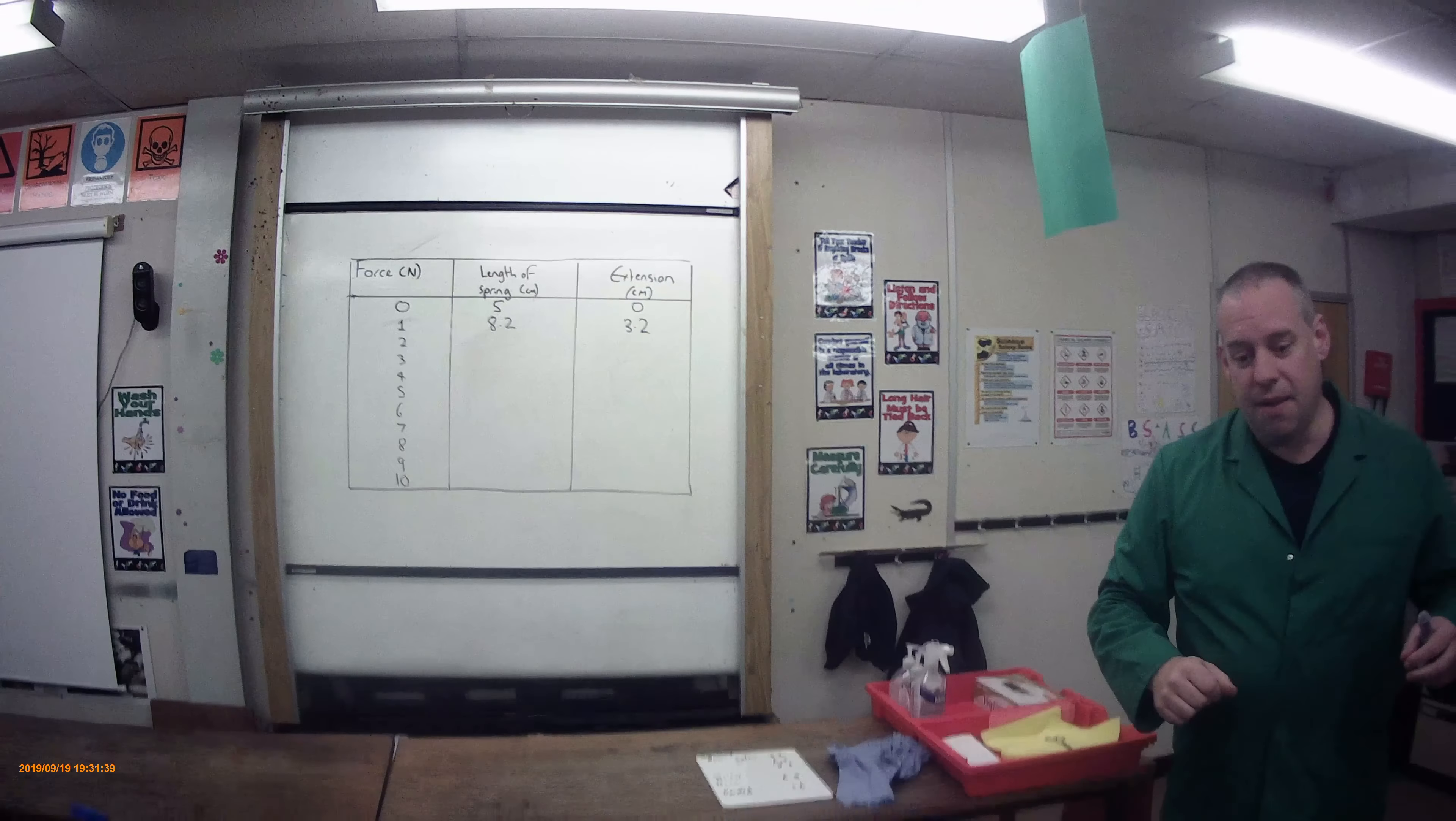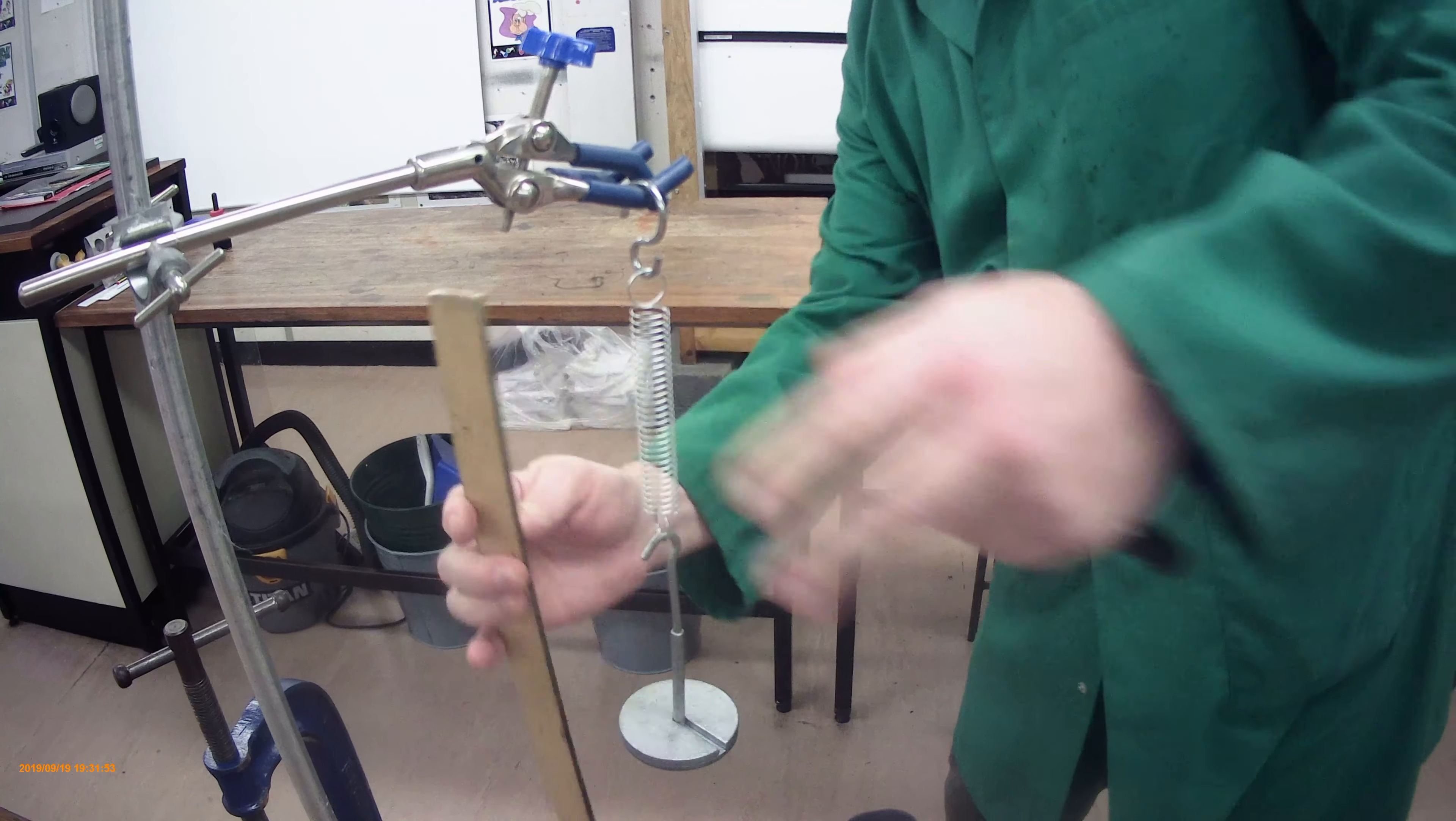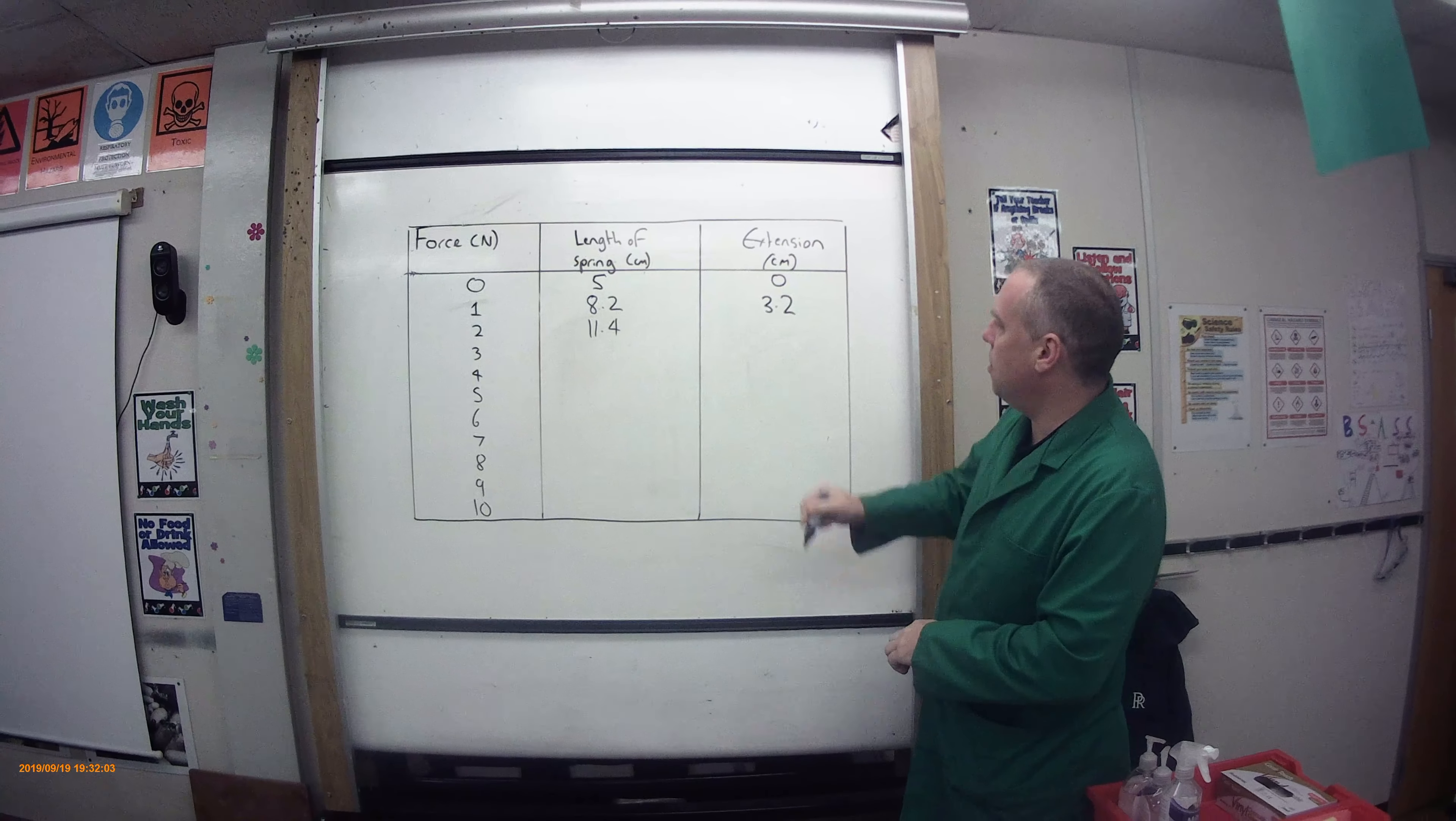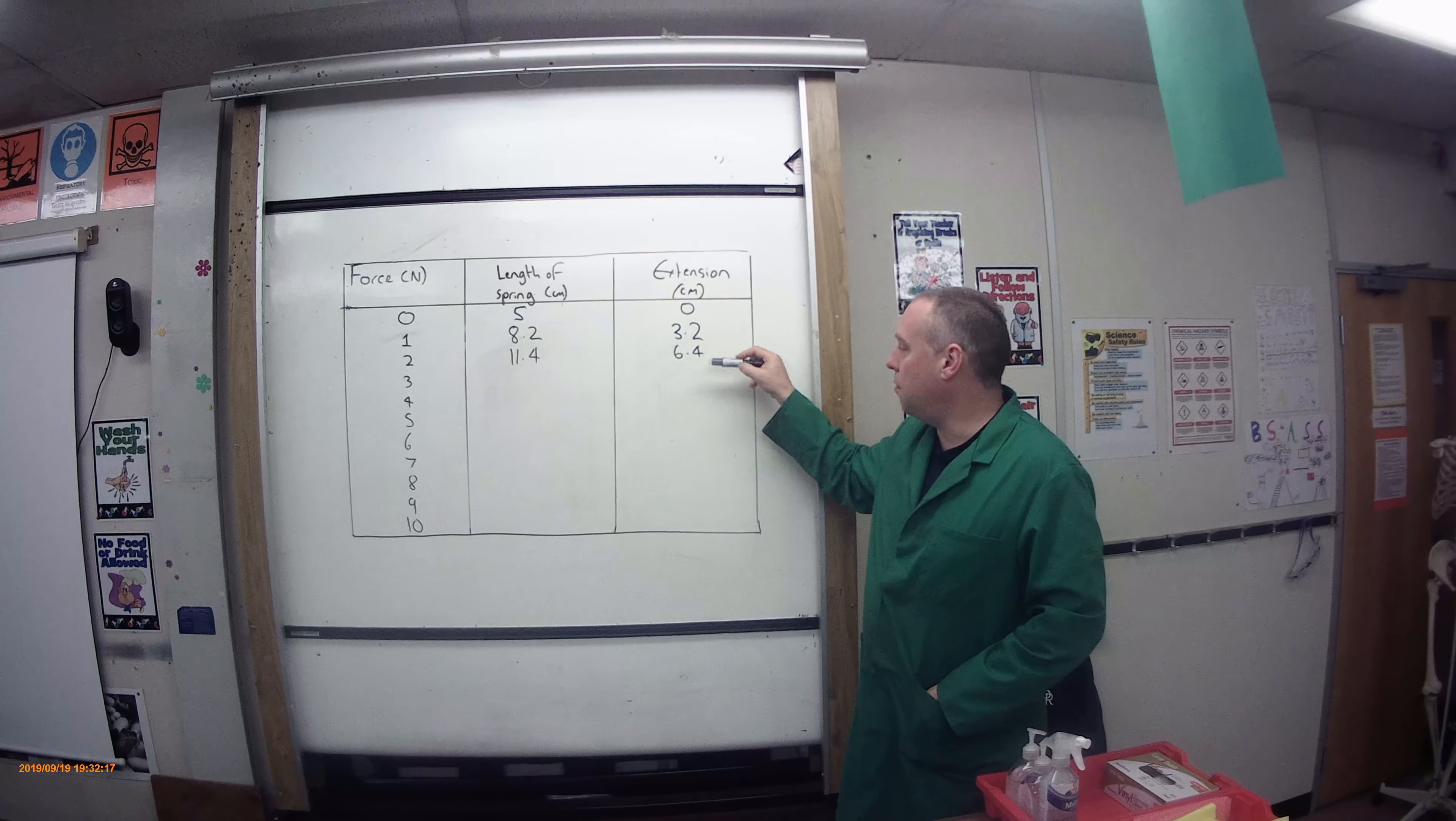Now if I add a second newton onto here, I've now got a new extension. And my new extension is 11.4. So again, the new extension is going to be that number minus that number, and that is 6.4. So the observant of you will notice that's a rise of 3.2, and that is a rise of 3.2.